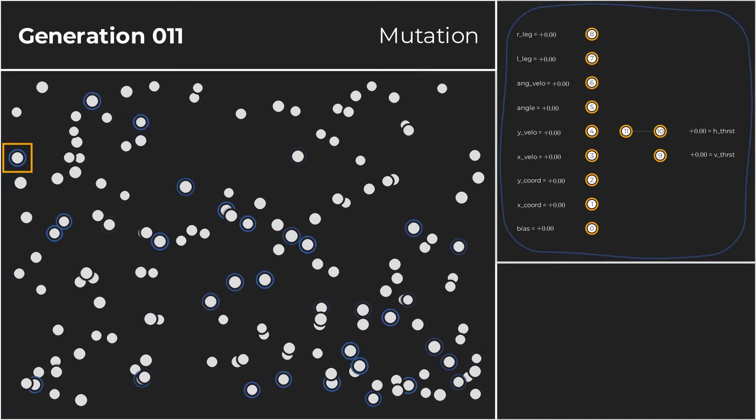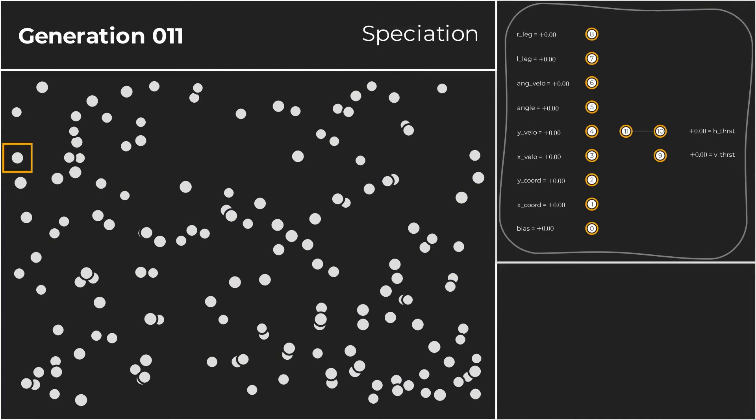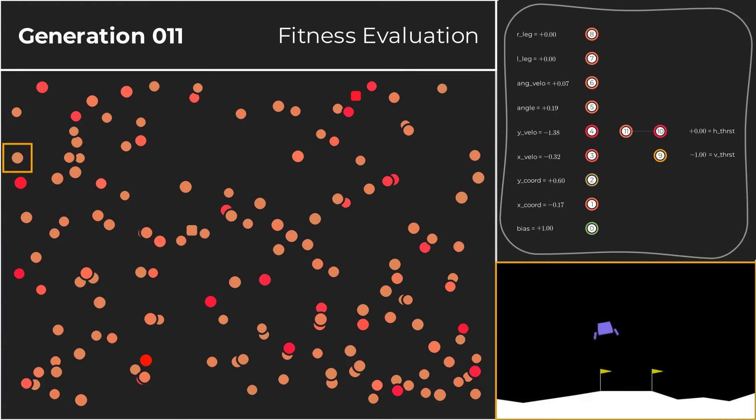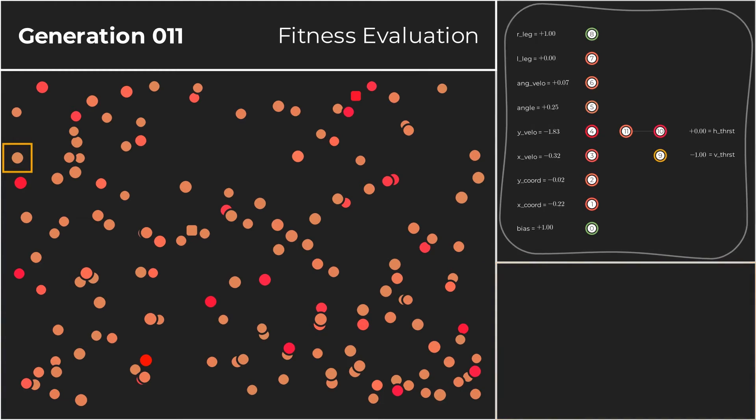After the usual mutation step, something interesting happens. A new species emerges, initially comprised of just two individuals. Let's see if there are any meaningful improvements regarding the network's performance. That doesn't seem to be the case, which is unsurprising given that there is not a single connection between input and the output nodes in this particular individual.